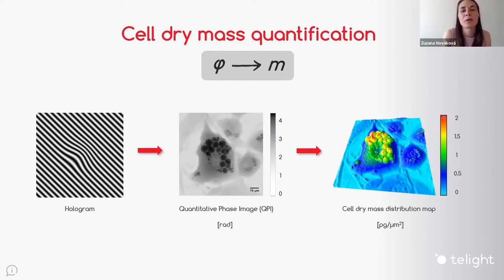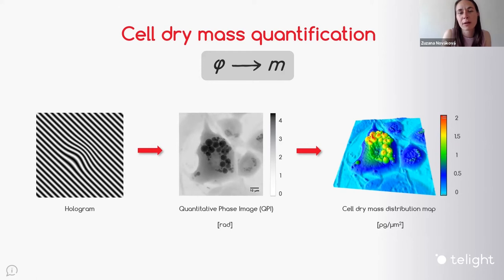Using another reprocessing step, we can easily get the image that has a scale not in radians, but a scale in picograms per micrometer squared.